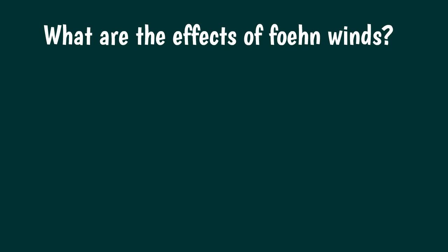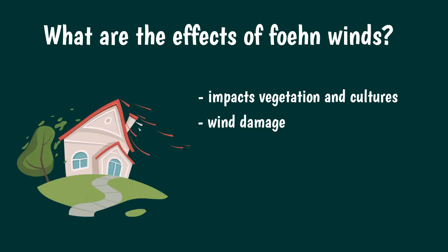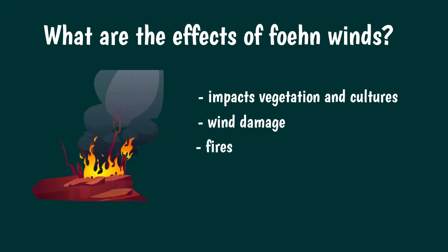Foehn winds can have some beneficial effects, as warmer climates can favor certain crops. It is, for example, partially thanks to foehn wind that wine can be produced in the Alps. But often the effects of foehn can be devastating. Foehn winds can attain considerable speeds and cause a lot of damage. People in California particularly dread the Santa Ana winds because they are known to promote wildfires.